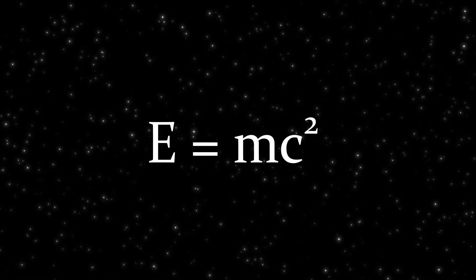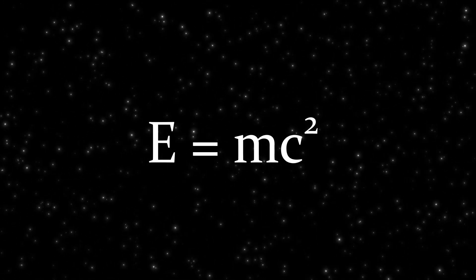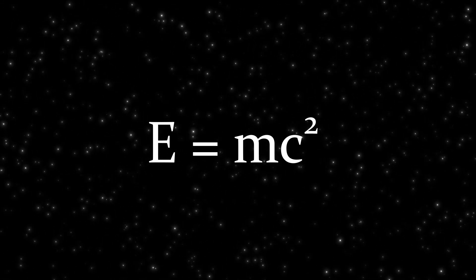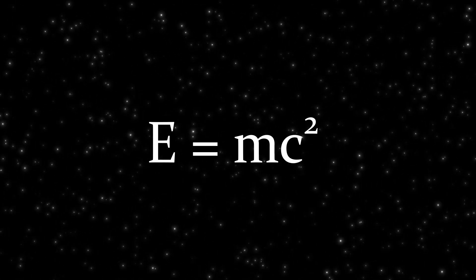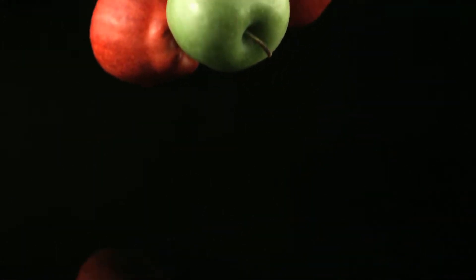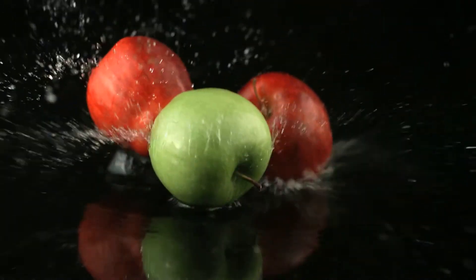I think everyone interested in physics is familiar with the formula E equals mc squared, has heard that it was derived by Einstein in his theory of relativity, and understands it as describing the equivalence of the concepts of mass and energy. That is, an object with mass always possesses energy, and an object with energy always possesses mass.